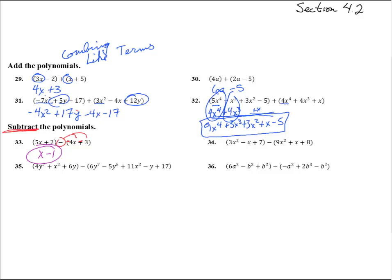Number 34. We are going to take that negative sign and make sure to distribute it everywhere. So we get 3x squared and a negative 9x squared, which gives us negative 6x squared. Negative x and negative x — that's negative 2x. And then 7 and a negative 8 — that's minus 1.